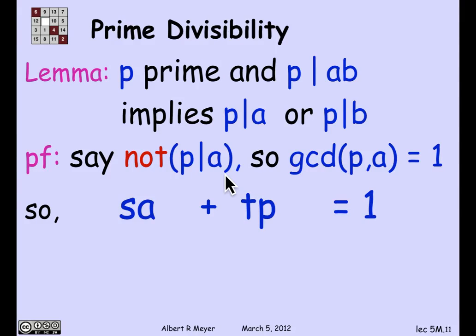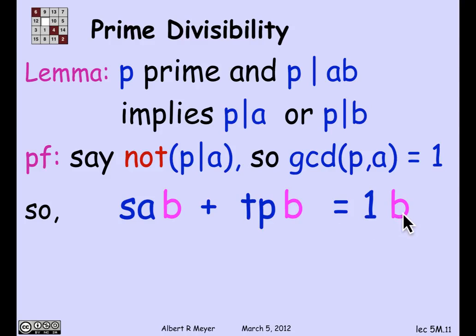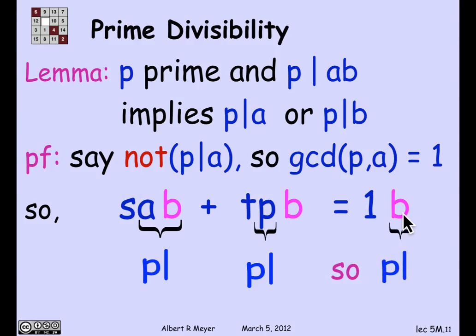Now comes the linear combination trick. Given that the GCD of p and a is 1, that means that I have a linear combination of a and p that's equal to 1: sa + tp = 1 for some coefficients s and t. Multiply everything by b on the right. So that means sab + tpb = b. Now look at what we have: the first term on the left is something times ab, and p divides ab, so that first term is divisible by p. The second term explicitly has a p in it, so it's certainly divisible by p. So the left-hand side is a linear combination of multiples of p, and therefore itself is a multiple of p, which means the right-hand side is a multiple of p, and the right-hand side is b.